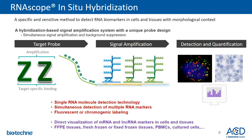RNAscope assay allows either fluorescent or chromogenic labeling and is compatible with a variety of sample types, including FFPE and frozen tissue as well as cell lines.